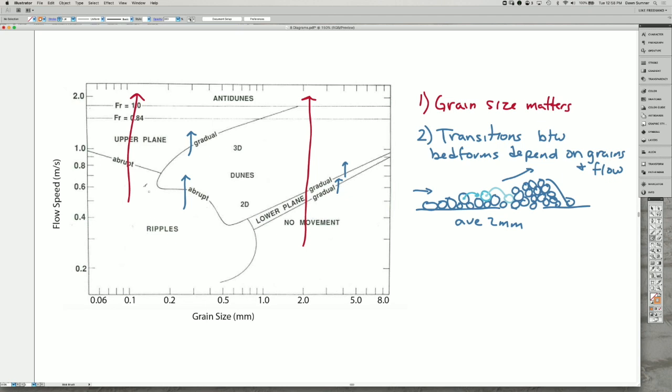One of the reasons that the change from ripples to other bed forms is abrupt is that ripples in general depend on the laminar part of the flow layer, whereas the other parts depend on the turbulence, the overall turbulence structure.